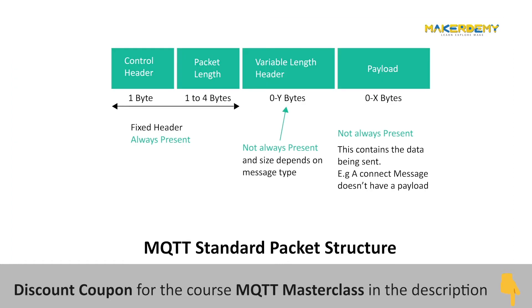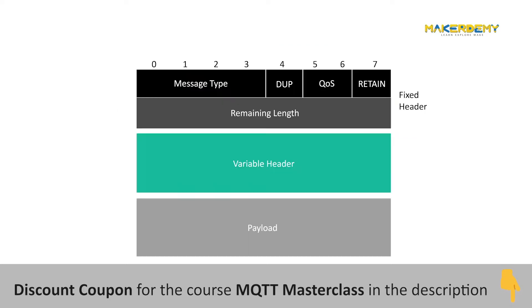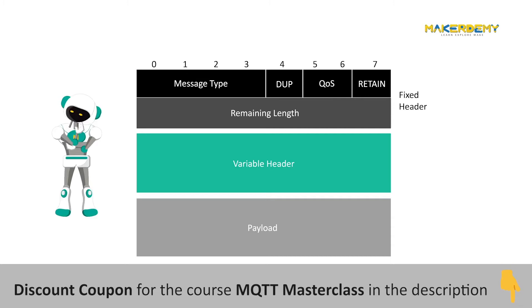In the last video, we looked at the control packet structure for the MQTT protocol. There are basically 14 types of MQTT packets. The type of packet is actually represented by the 4 bits present in the fixed header.